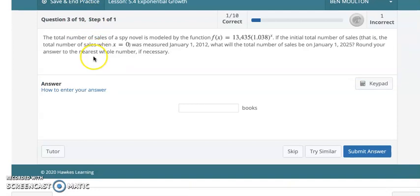Now my third problem I'm dealing with, the total number of sales of a spy novel is modeled by the function f(x) = 13,435 × 1.038^x. If the initial total number of sales, that is the total number of sales when x = 0, is measured on January 1, 2012, what's the total number of sales going to be on January 1, 2025? Round to the nearest whole number. This is going to be a lot like a previous problem, except what we're going to do is figure out what happens for x. 25 minus 12, that's 13, so plug in 13 for x, solve it, you've got it. Let's move on.